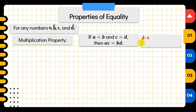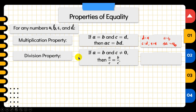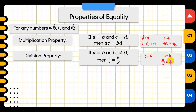For multiplication property: if A equals B and C equals D, then AC equals BD. For example, if D equals 4, then C also equals 4, so we multiply A equals B by 4 on both sides — 4A equals 4B. The division property of equality is the inverse: as long as the divisor is not equal to zero, whatever you divide on the left side, divide the same on the right side.